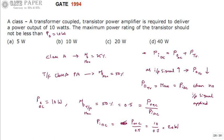When no input signal is applied, this entire 20 watts is going to be dissipated across the transistor. At that time, the transistor should not be destroyed. Therefore, the maximum power rating of the transistor must be at minimum 20 watts — so the transistor power rating has to be equal to 20 watts.